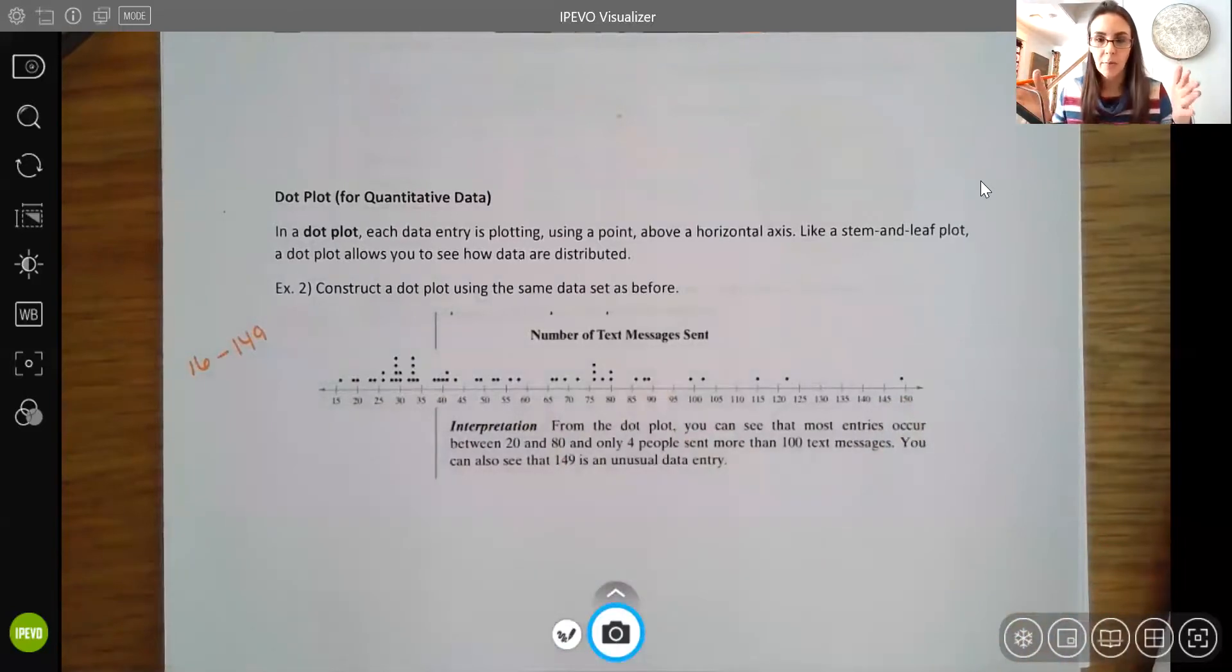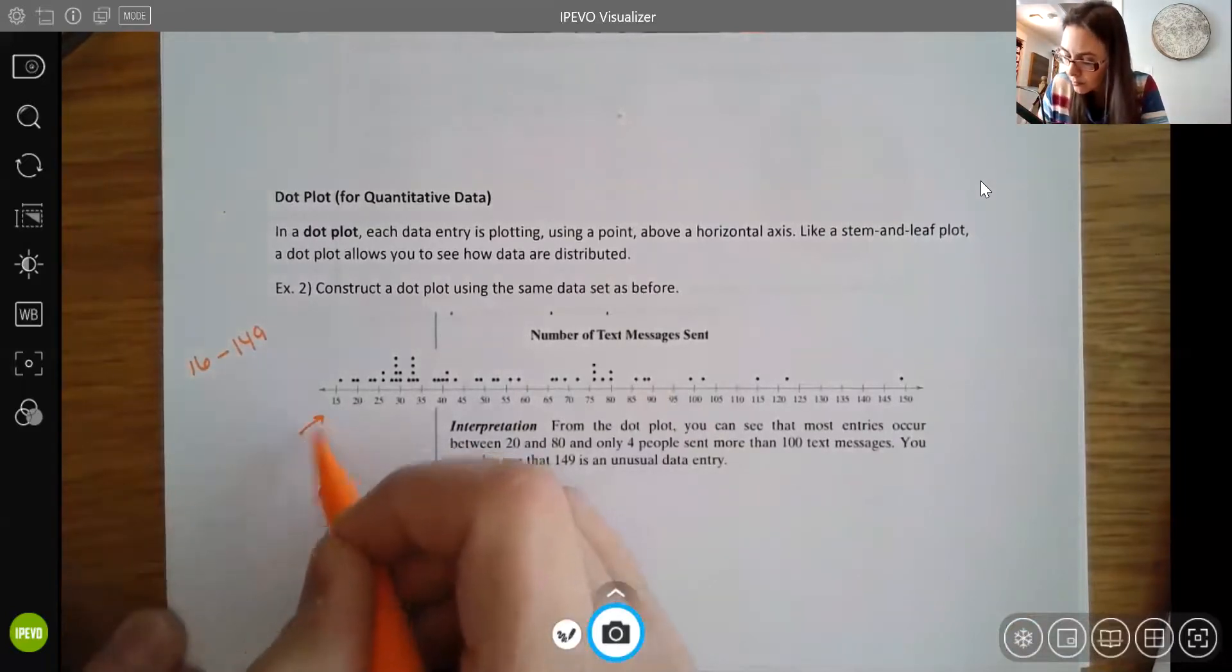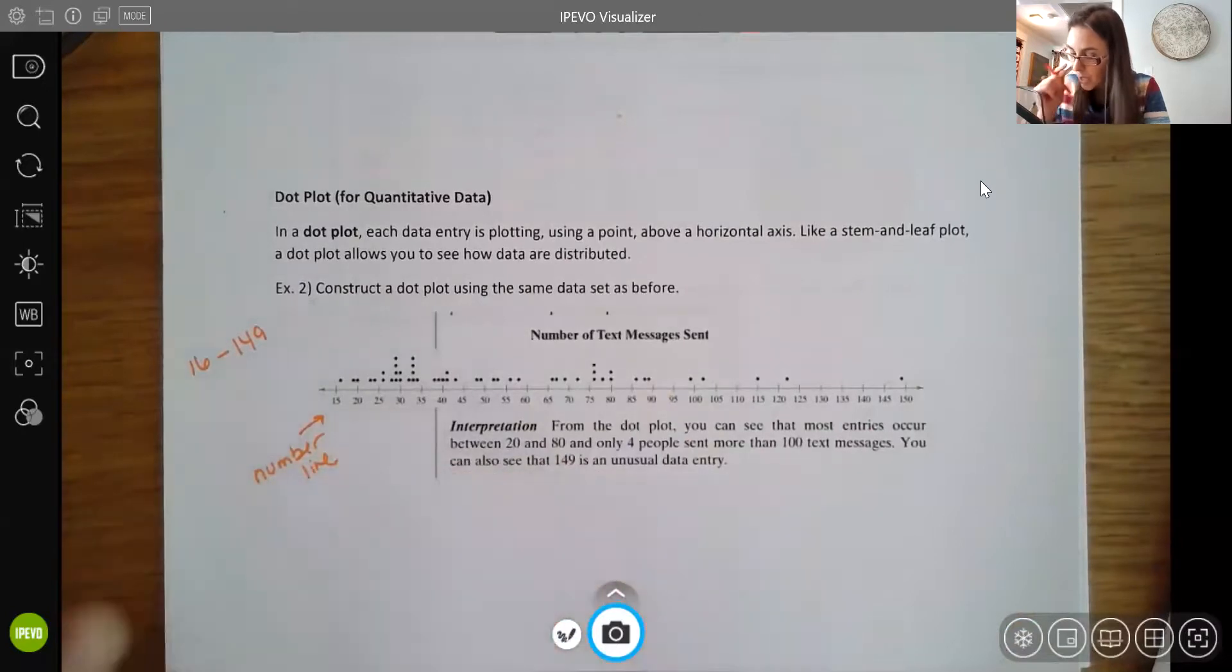Right. So it includes all of that data point, but we're not including extra values on the end. So you start with this number line. And then what you do is you put a dot above the number line for each point. And again, like the stem and leaf plot, it's not difficult to do. You just have to be careful as you go through one point at a time.